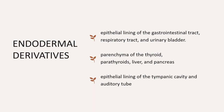The endodermal germ layer provides the epithelial lining of the gastrointestinal tract, respiratory tract, and urinary bladder. It also forms the parenchyma of the thyroid, parathyroid, and pancreas. Finally, the epithelial lining of the tympanic cavity and auditory tube are also endodermal in derivation.